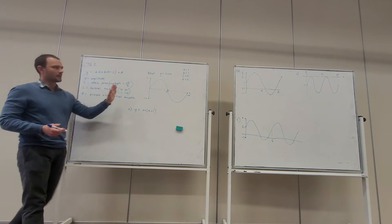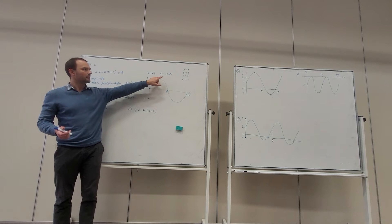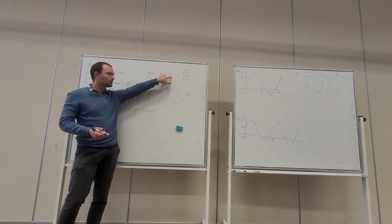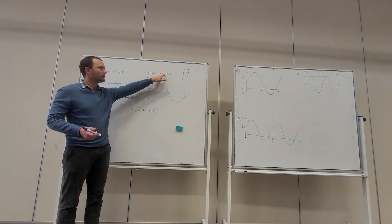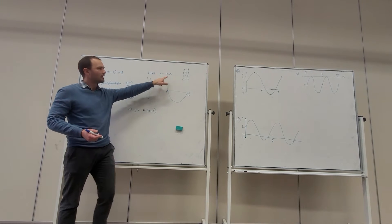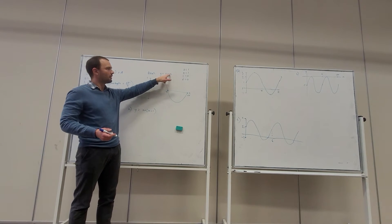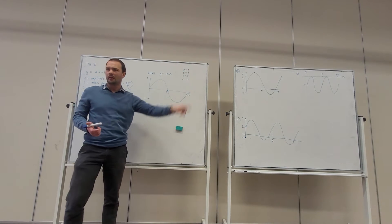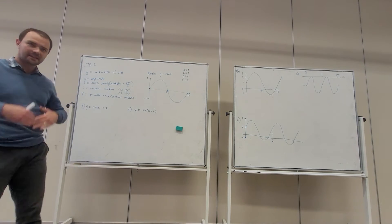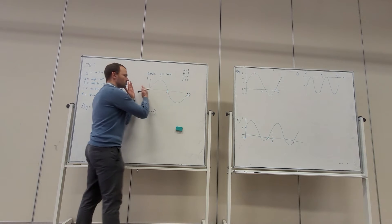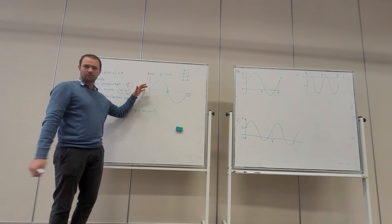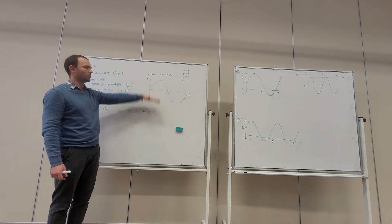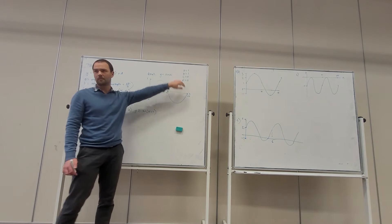This is what we covered last lesson: this is the basic sine function. It has an amplitude of 1 — that number up front, there's one lot of sine. We've got the number 1 in front of X, so our value of A and our value of B are both 1. There's no horizontal translation and no vertical translation, so both C and D are 0.